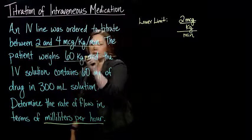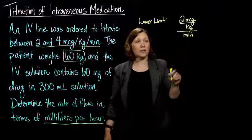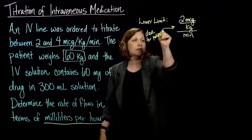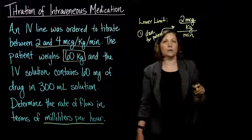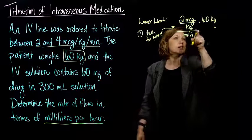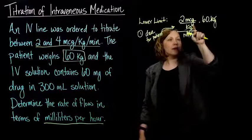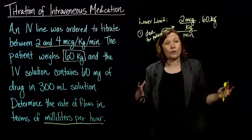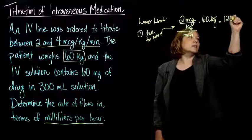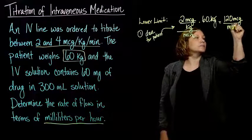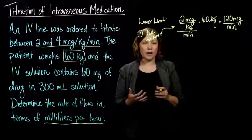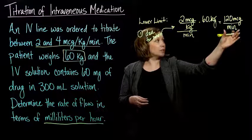We know the patient weighs 60 kilograms, so we need to figure out the dose for the patient based on weight. We take 2 micrograms per kilogram per minute and multiply by 60 kilograms — the kilograms cancel out — and we end up with 120 micrograms per minute. So we've got the dose for our patient.